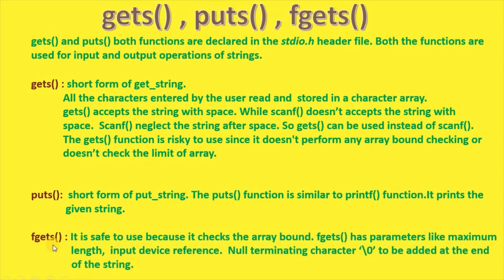The fgets function is safe to use because it checks the array bound. fgets has parameters like maximum length, input device reference, and adds a null terminating character (backslash 0) at the end of the string.